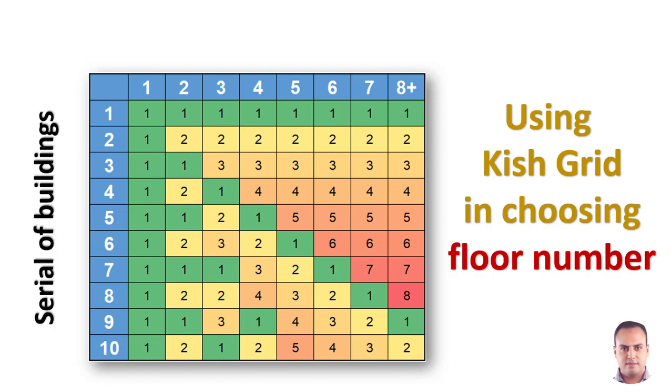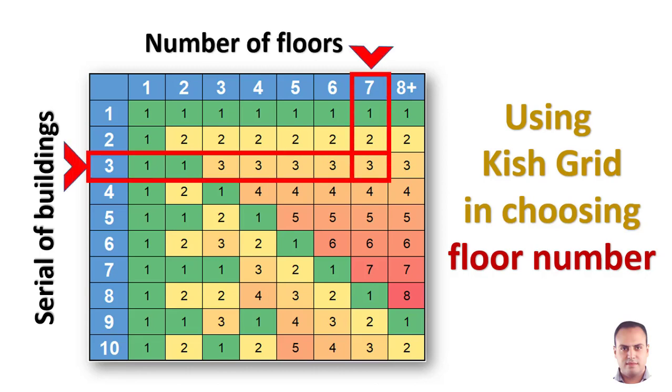Assume that you are moving in your field survey from building to building. If you are free to choose the floor, it's easy for you to choose first or second floor. But with Kish grid, if you choose the floor according to Kish grid, it's easy to be randomized.